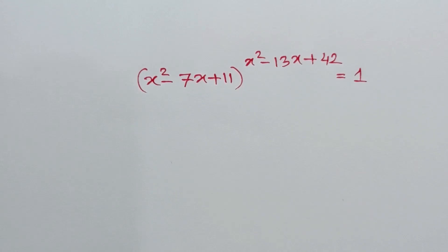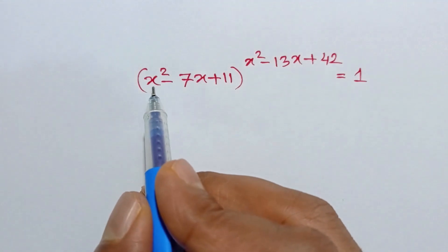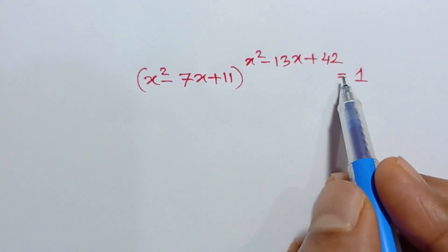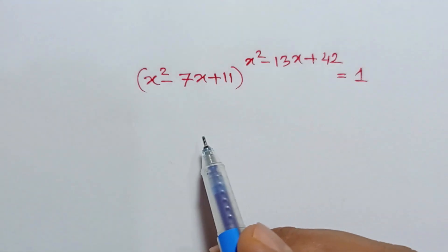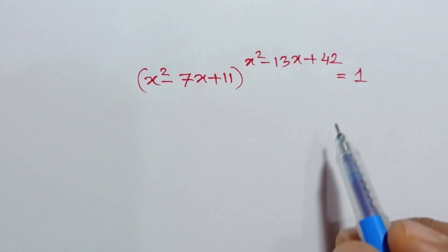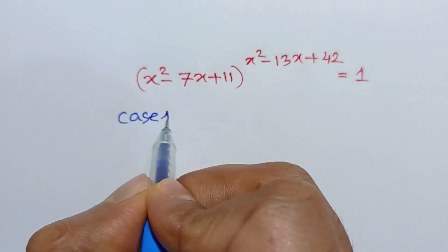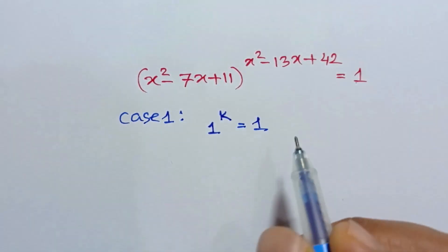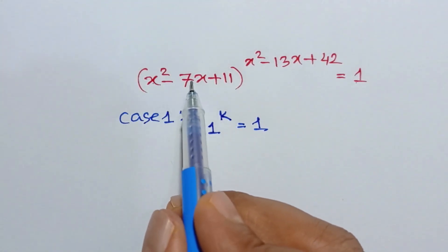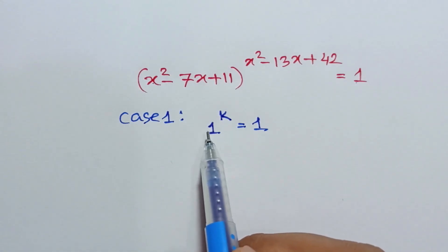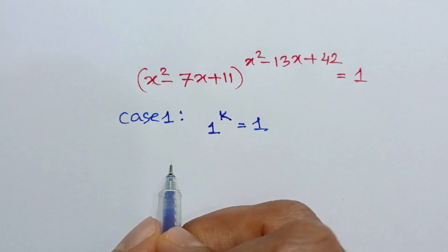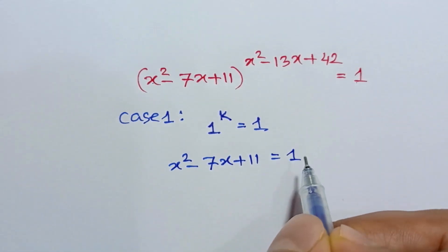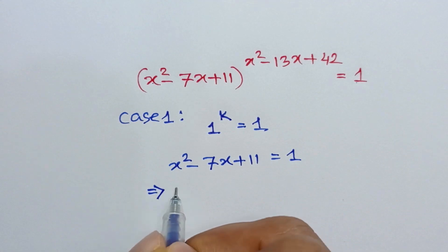Hi everyone. In this video I am going to show how to solve (x² - 7x + 11)^(x² - 13x + 42) = 1. We can divide it into three cases for which the result will be 1. Case 1: when 1 to the power k equals 1, that means when the value of x² - 7x + 11 equals 1, then the value will be 1. So we can write x² - 7x + 11 = 1.